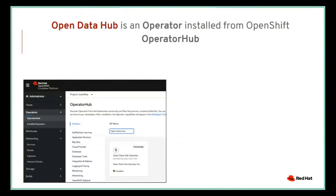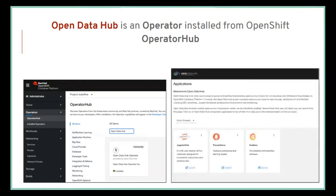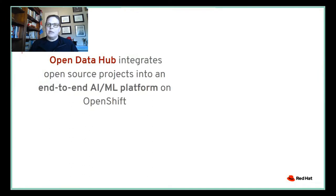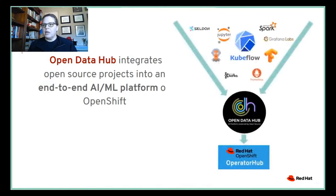Open Data Hub is an operator installed from the OpenShift Operator Hub. You can navigate to the OpenShift screen, choose Open Data Hub, and see the various tools available — such as JupyterHub for data scientists or Grafana for business analysts reviewing model results. Open Data Hub integrates open source projects into an end-to-end AI ML platform on OpenShift. We take projects such as Kubeflow, adapt them to run on OpenShift, package them within an operator, and offer it on Operator Hub.